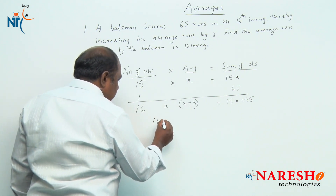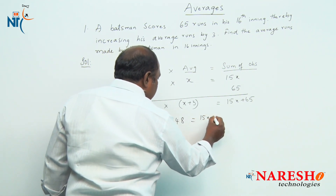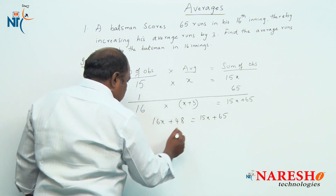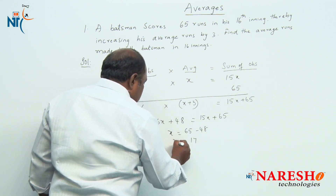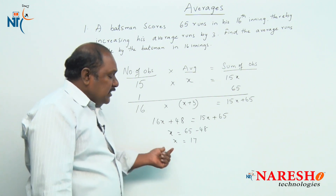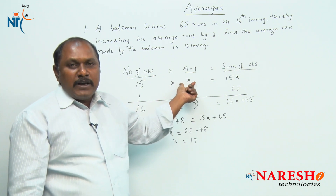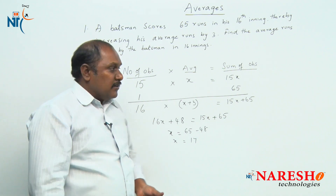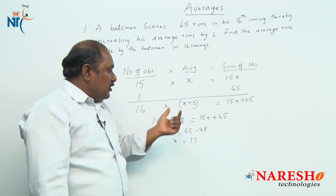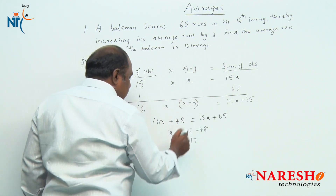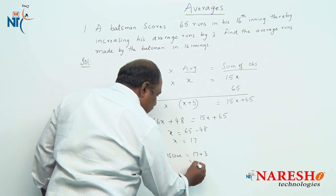Solving this: 16x plus 48 equals 15x plus 65, so x equals 17. We assumed x as the average runs scored by the batsman in 15 innings. But what is asked in the question? Find the average runs made by the batsman in 16 innings. So in 16 innings the average should be x plus 3, so the answer for this question should be 17 plus 3, which is 20.